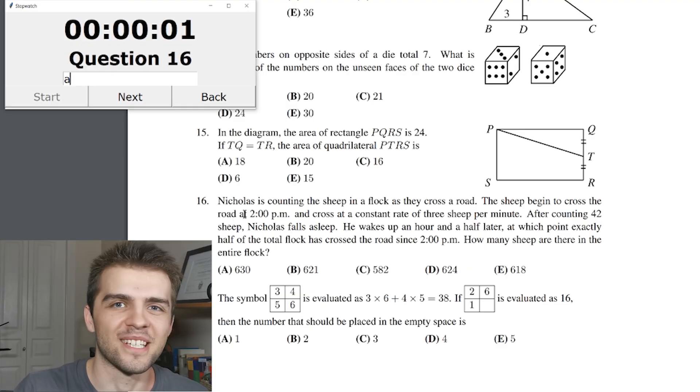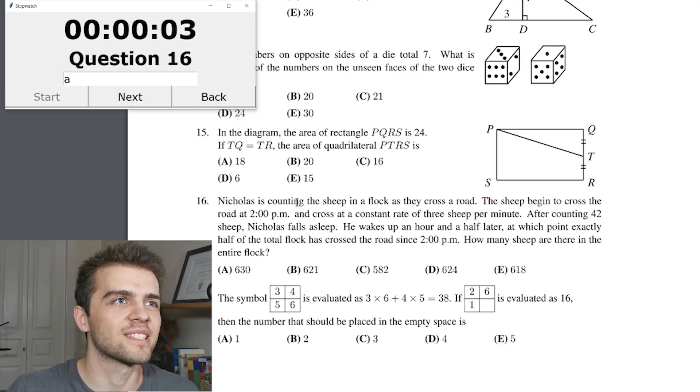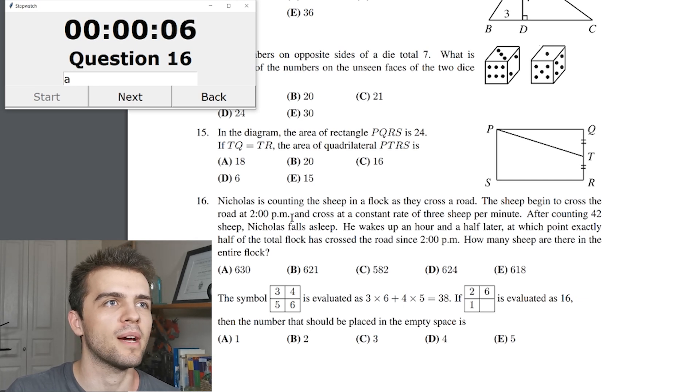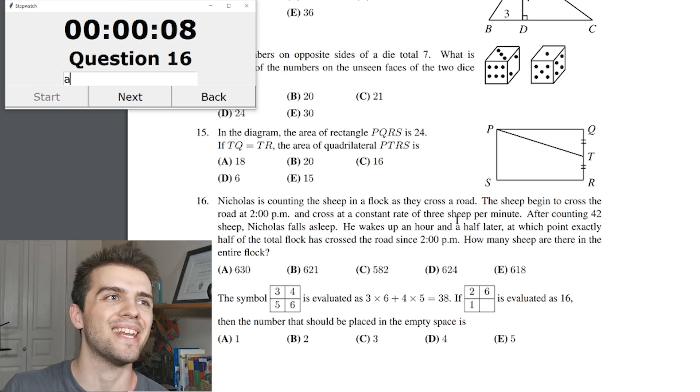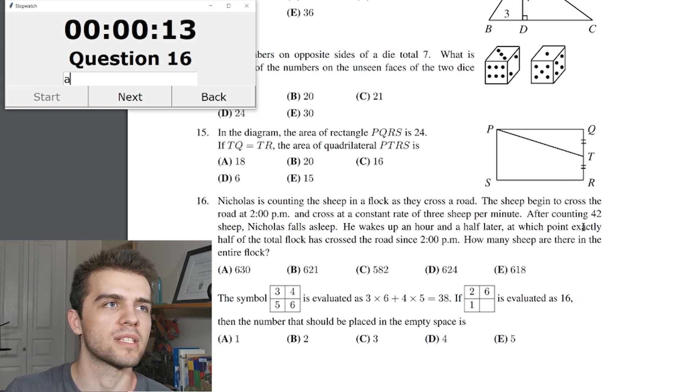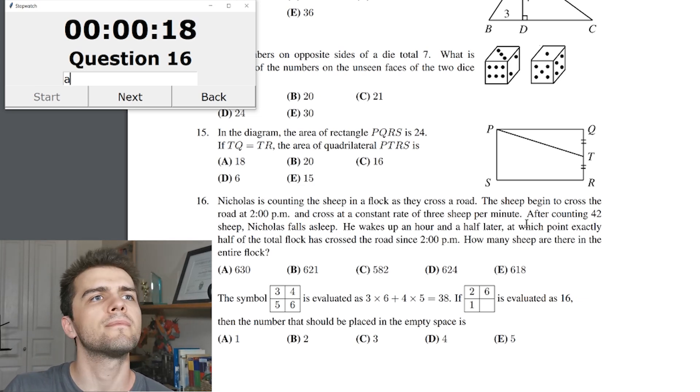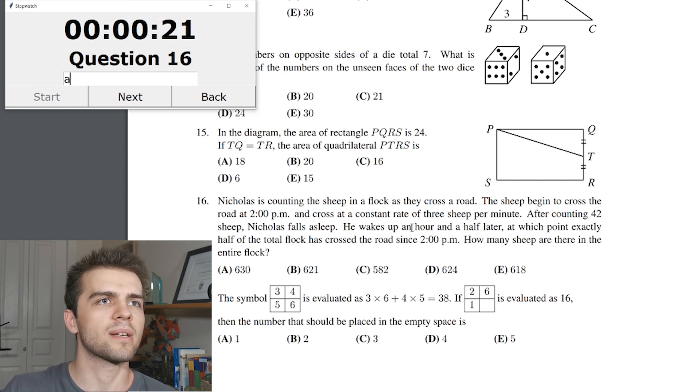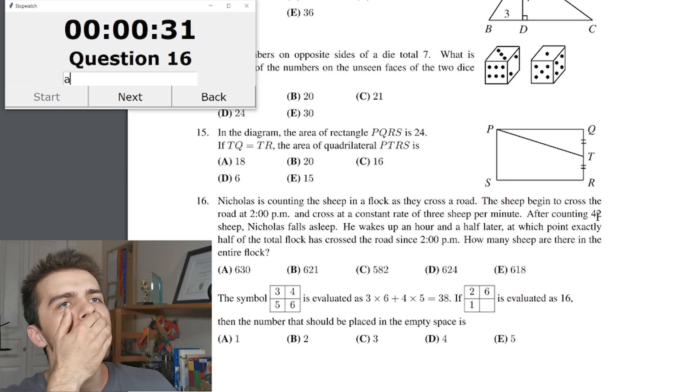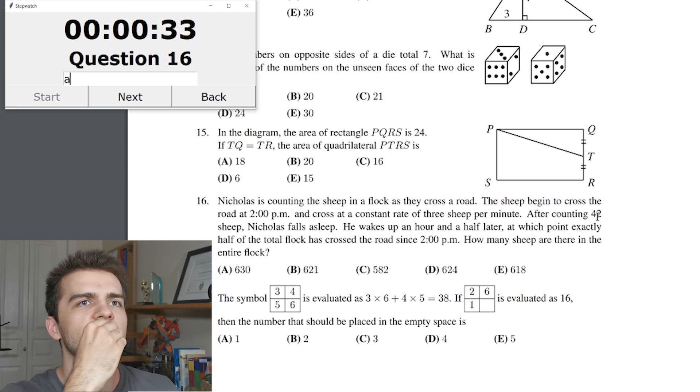We're getting into the hard questions now. I'm not looking forward to this. Just kidding. I'm going to wreck it. Nicholas is counting the sheep and a flock as they cross the road. The sheep begin to cross the road at 2 p.m. at a constant rate of three sheep per minute. Okay. After counting 42 sheep, Nicholas falls asleep. So how many minutes is that? 3 to 42, 10, 14. So 14.